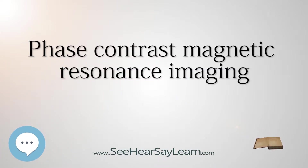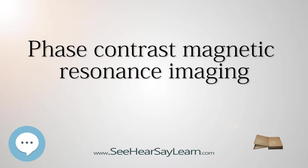Phase Contrast Magnetic Resonance Imaging, PCMRI, is a specific type of magnetic resonance imaging used primarily to determine flow velocities. PCMRI can be considered a method of magnetic resonance velocimetry. It also provides a method of magnetic resonance angiography. Since modern PCMRI is typically time-resolved, it provides a means of 4D imaging — three spatial dimensions plus time.